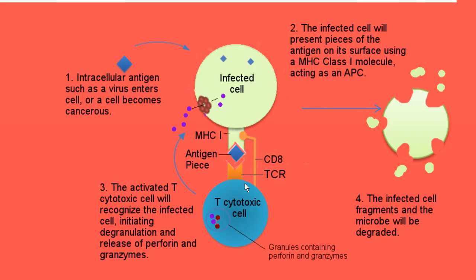Let's review the killing mechanisms of active cytotoxic T cells. The active cytotoxic T cell comes in contact with an infected cell at the site of infection. The cytotoxic T cell knows which cells are infected because infected cells present antigen on their surface using an MHC class I molecule. Once the cytotoxic T cell finds the infected cell, it binds to it. Through exocytosis, the cytotoxic T cell releases perforin and granzymes. Perforin are proteins used to poke a hole in the infected cell, and granzymes are degradation enzymes which break down antigen pieces and cellular debris. The release of perforin and granzymes initiates controlled cell death in the infected cell, so it doesn't lead to infection of surrounding cells.